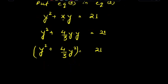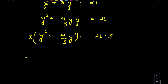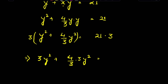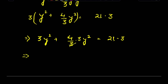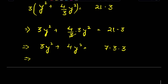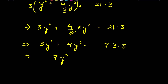Multiply both sides by 3: 3y squared plus 4y squared is equal to 21 times 3. The 3s cancel, giving 3y squared plus 4y squared equals 63. So 7y squared is equal to 63.